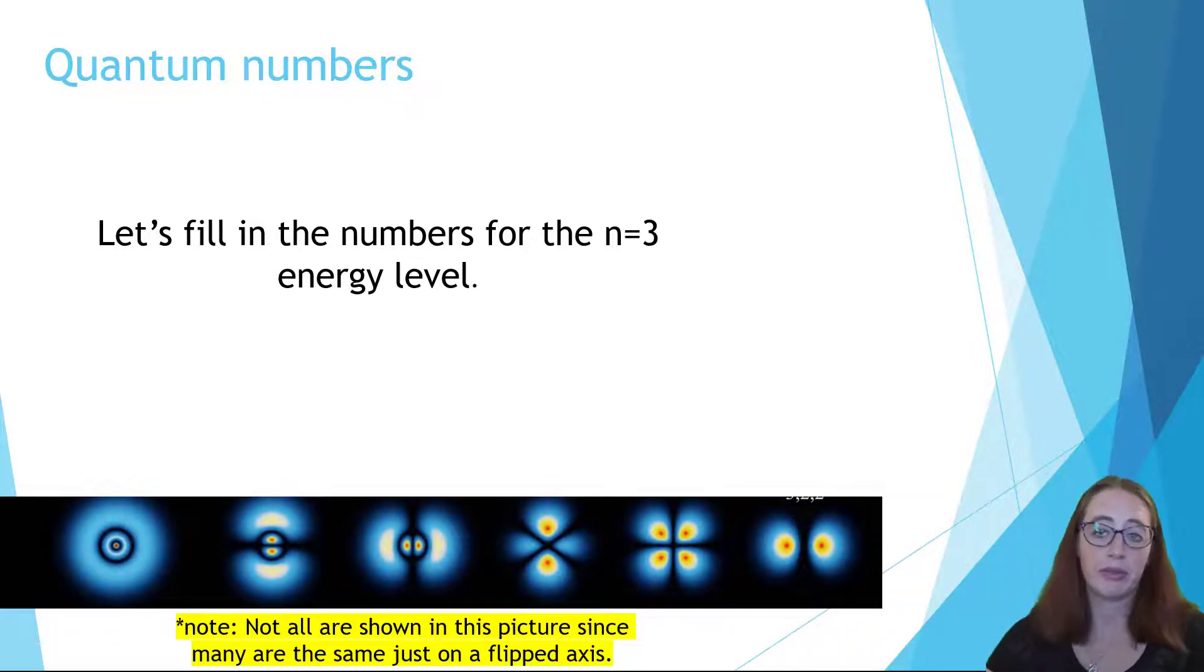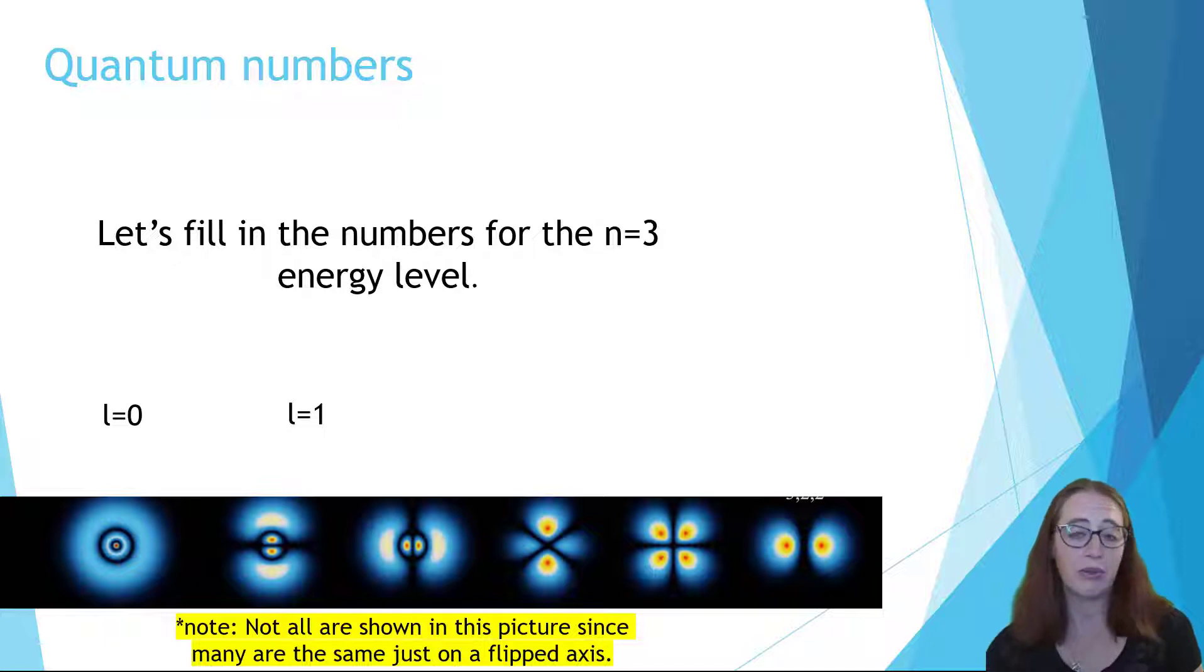Here are some pictures of the orbitals that we've been talking about. Let's fill in the possible quantum numbers for n equals three level. Since n equals three, l is allowed to equal zero, one, and two. This means that the third energy level has s, p, and d orbitals. That should align with what I told you in the electron configuration.